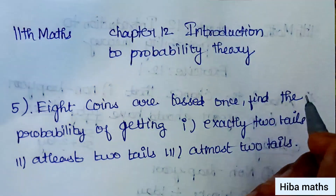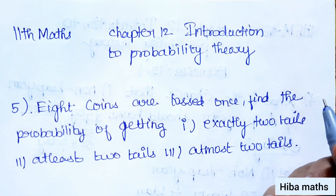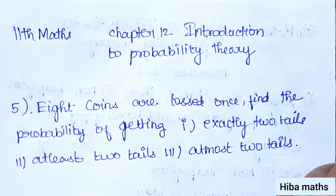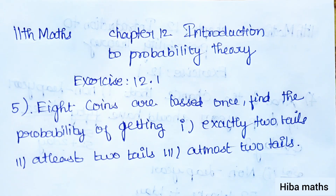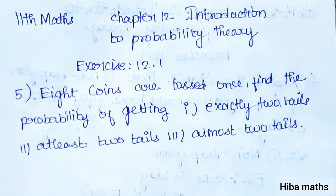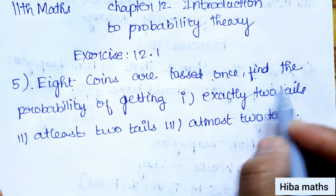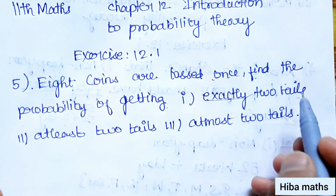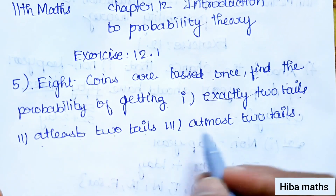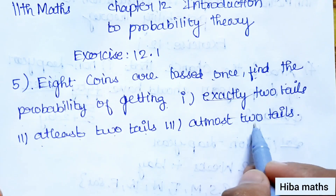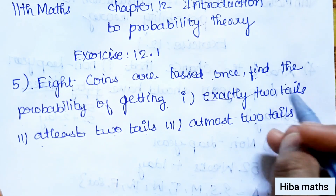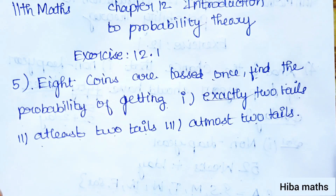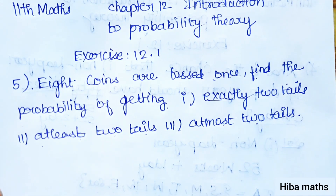Hello students, welcome to HIPA MAX 11th standard, MAX chapter 12, introduction to probability theory, exercise 12.1, 5th question. 8 coins are tossed once. Find the probability of getting exactly 2 tails, at least 2 tails, and at most 2 tails. Now how to solve it?